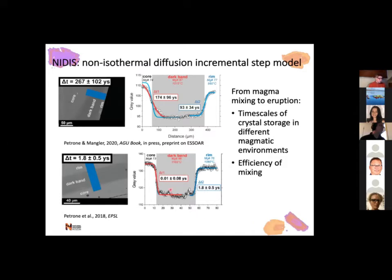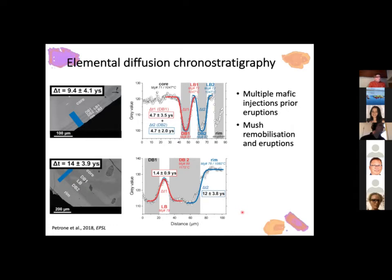In this particular case from Stromboli, we have a delta T1 which is much shorter than delta T2, which tells us something about the efficiency of mixing, as I will show later. We were also able to resolve more complex crystals. In the top clinopyroxene we have three different magmatic injections and were able to resolve the timescale and storage of the arrival of each of these magmatic injections. In the bottom crystal we have a complex and sieved core, which tells us about mass remobilization and eruption.